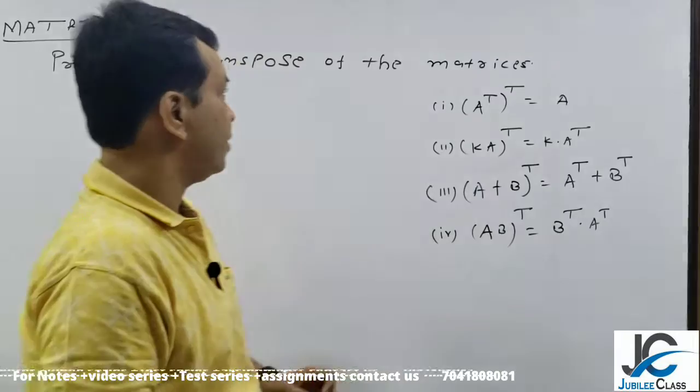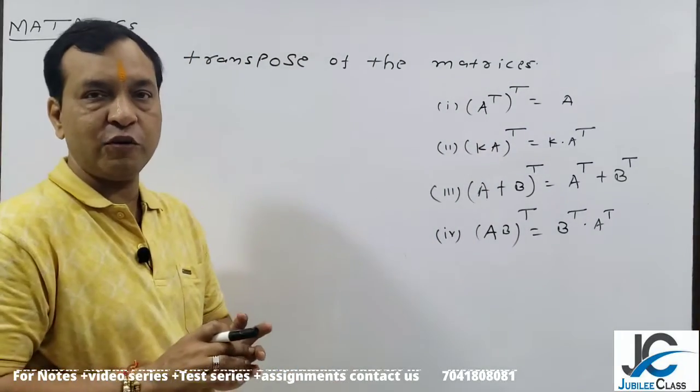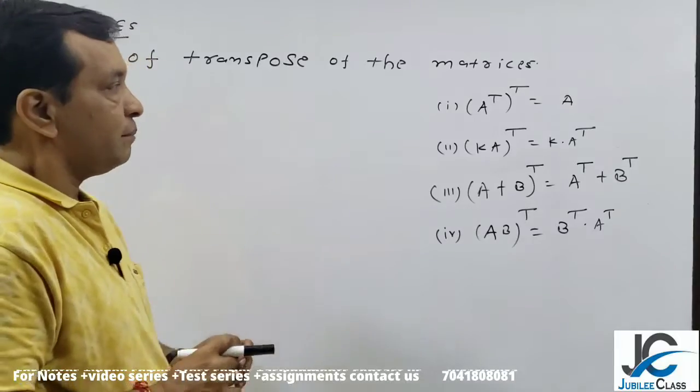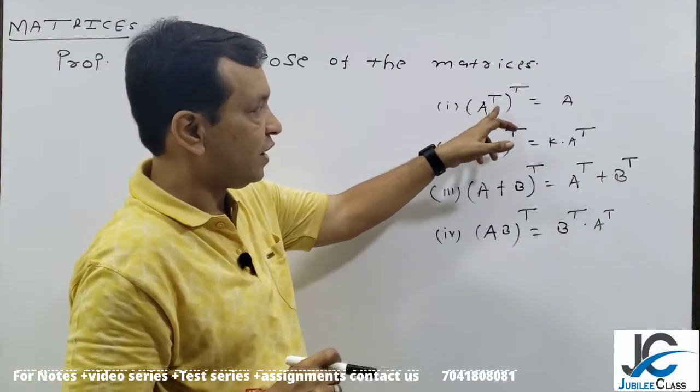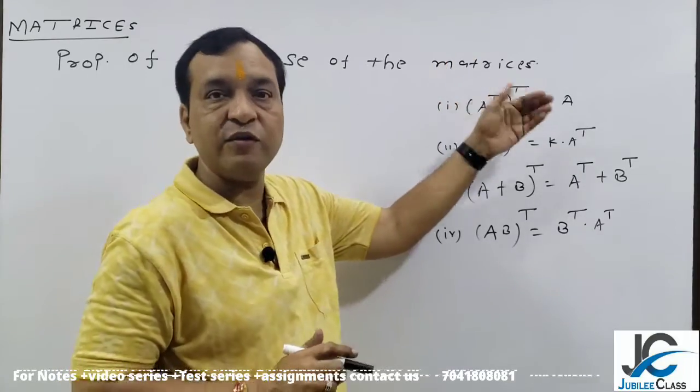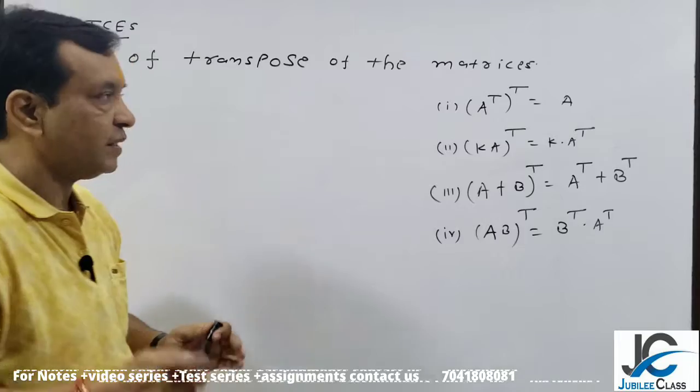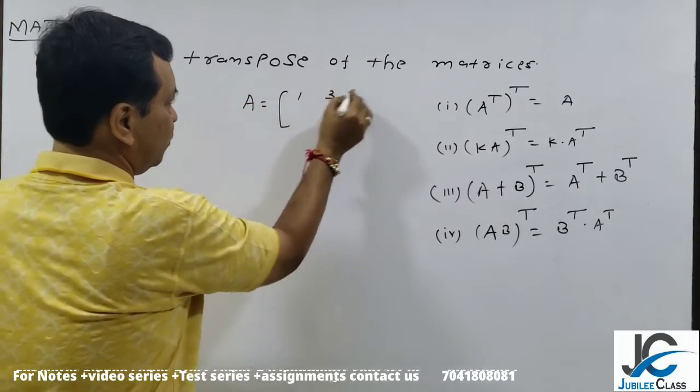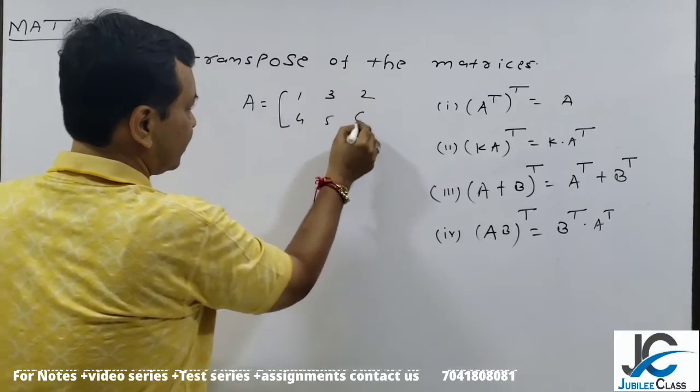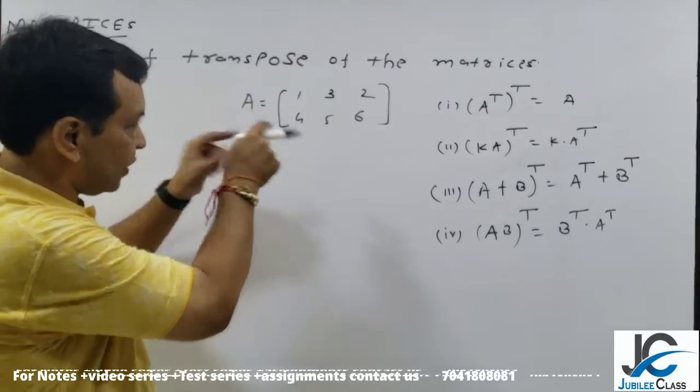Hello friends, properties of the matrices. It is very simple to calculate. The first property is transpose of A and its transpose gives the original value. See, simple. Suppose we have A equal to [1, 3, 2; 4, 5, 6], am I right? What is the transpose of this?